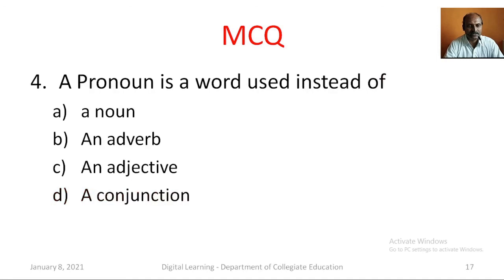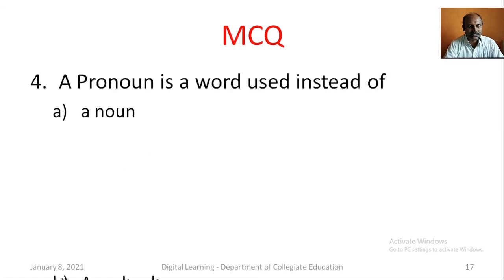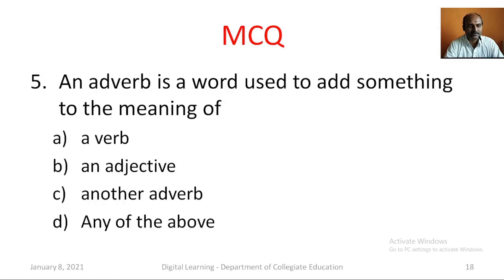Question number 4: A pronoun is a word used instead of — option A: a noun, option B: an adverb, option C: an adjective, option D: a conjunction. The correct answer is a noun. Question number 5: An adverb is a word used to add something to the meaning of — option A: a verb, option B: an adjective, option C: another adverb, option D: any of the above. The correct answer is option D, any of the above.